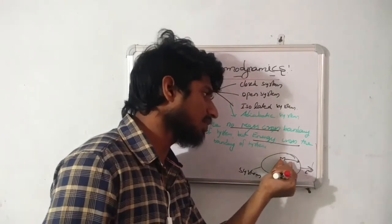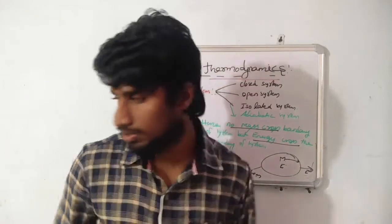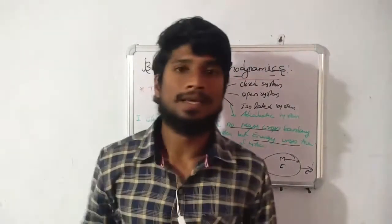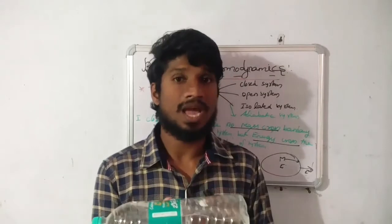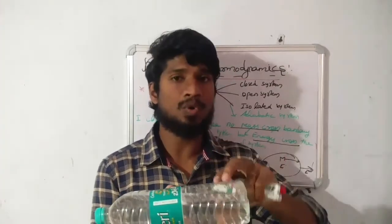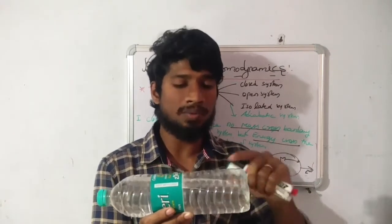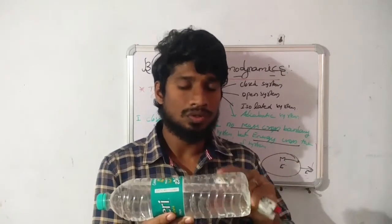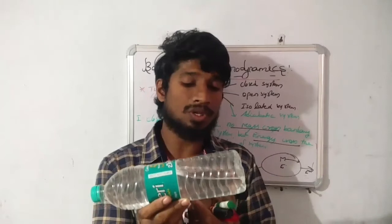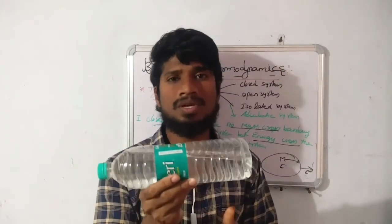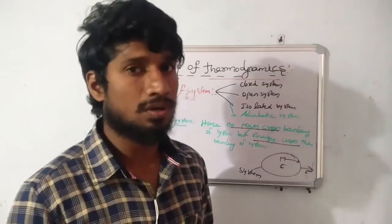Let's see one general example for the closed system. Consider one water bottle filled with hot water. After some time, what is the amount of water in the bottle? There is no change in the quantity of water. But what about the hotness? It will be reduced — meaning the amount of heat has transferred to the surroundings. But the mass of the system has not changed. These types of systems are called closed systems.